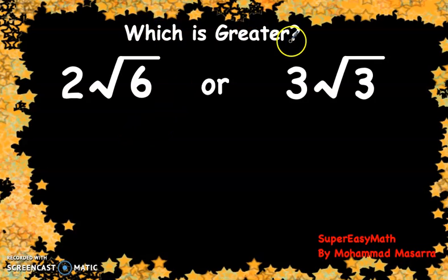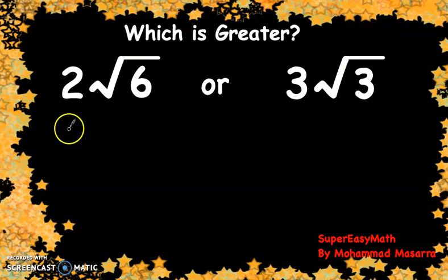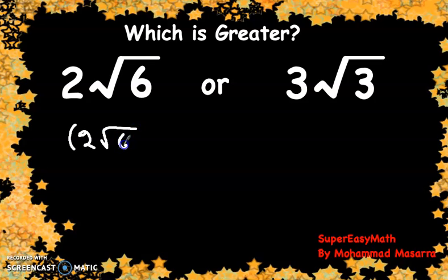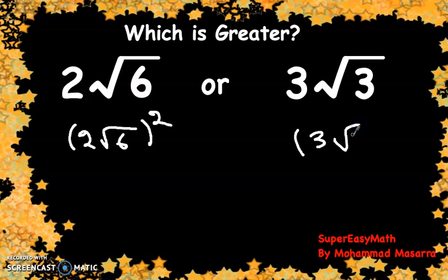Hello. Which is greater: 2√6 or 3√3? To solve this question, we have to know the exact value of these two numbers, and to do that we have to square both of them. So we take the square of 2√6 and the square of 3√3.